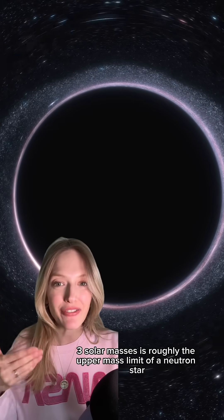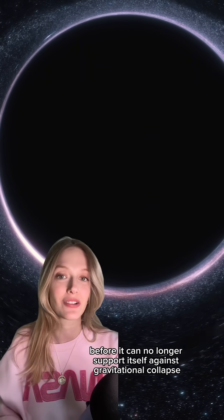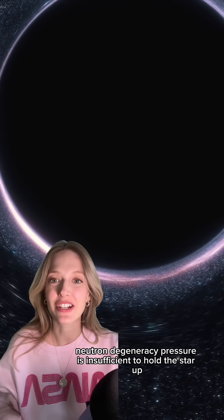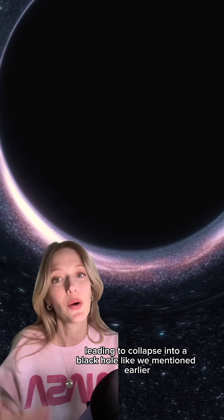Three solar masses is roughly the upper mass limit of a neutron star before it can no longer support itself against gravitational collapse. Beyond this point, neutron degeneracy pressure is insufficient to hold the star up, leading to collapse into a black hole like we mentioned earlier.